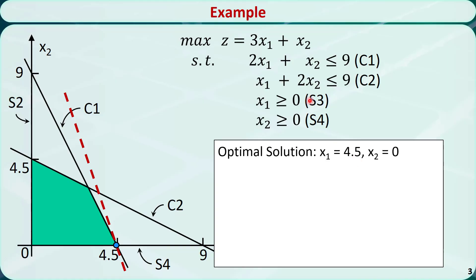Let's plug these values into the constraints and sign restrictions. For c1, we have 2 times 4.5 plus 0 is equal to 9, which is equal to the right-hand side. So c1 is binding.